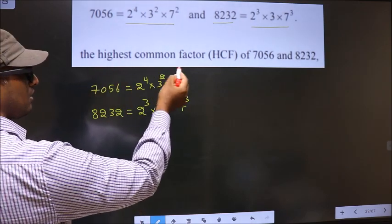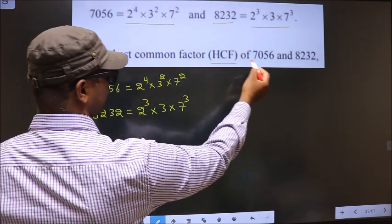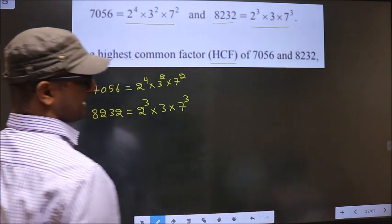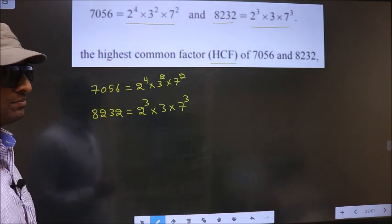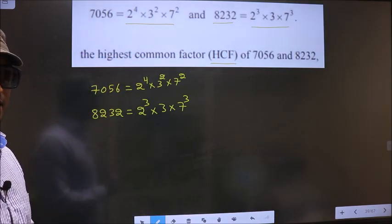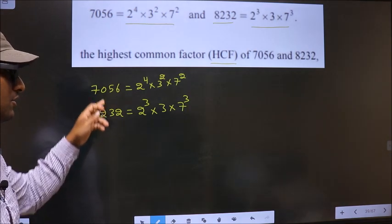The highest common factor (HCF) of 7056 and 8232. Now we should find the HCF of these two numbers.